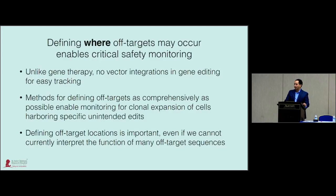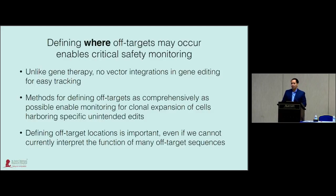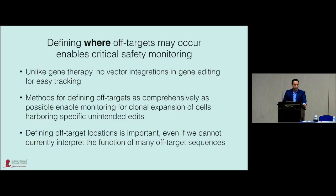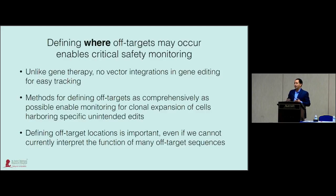Unlike gene therapy, there are no vector integrations that are easy to track in gene editing. Defining where all off-target sites might occur really enables critical safety monitoring. Methods for defining off-targets as comprehensively as possible might enable you to detect, in an early fashion, the clonal expansion of cells harboring unwanted edits. Even if we can't interpret the function of off-targets in intergenic regions, knowing where they are would enable us to monitor them over time.